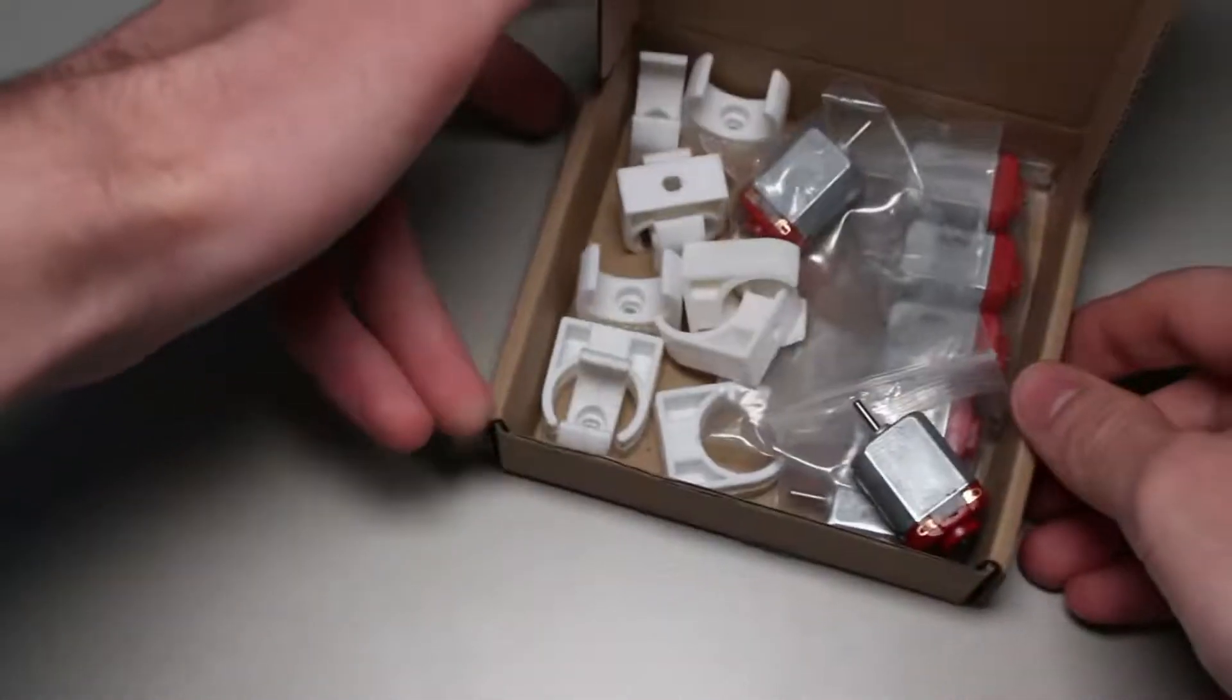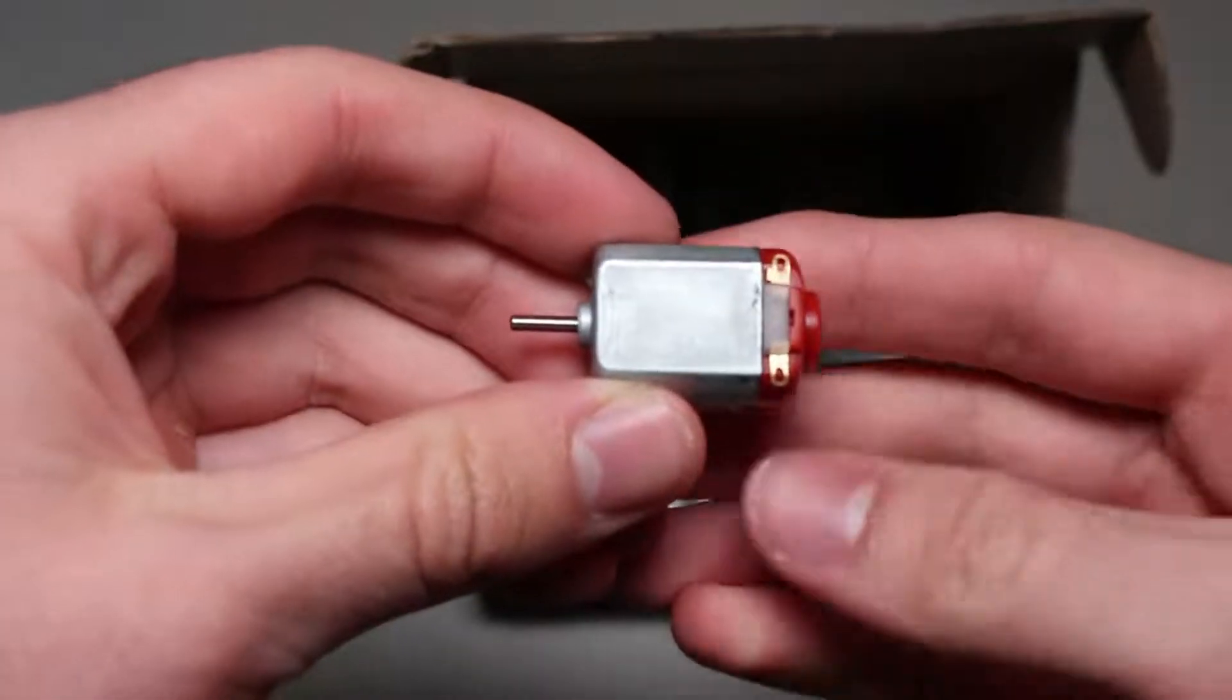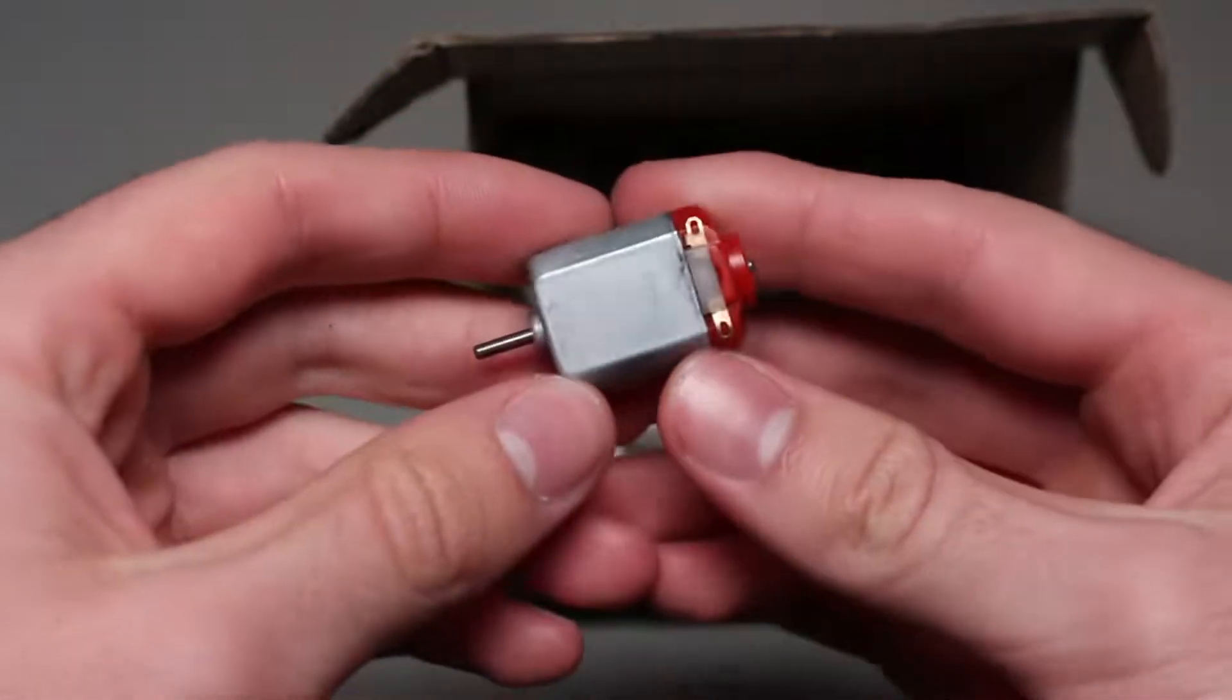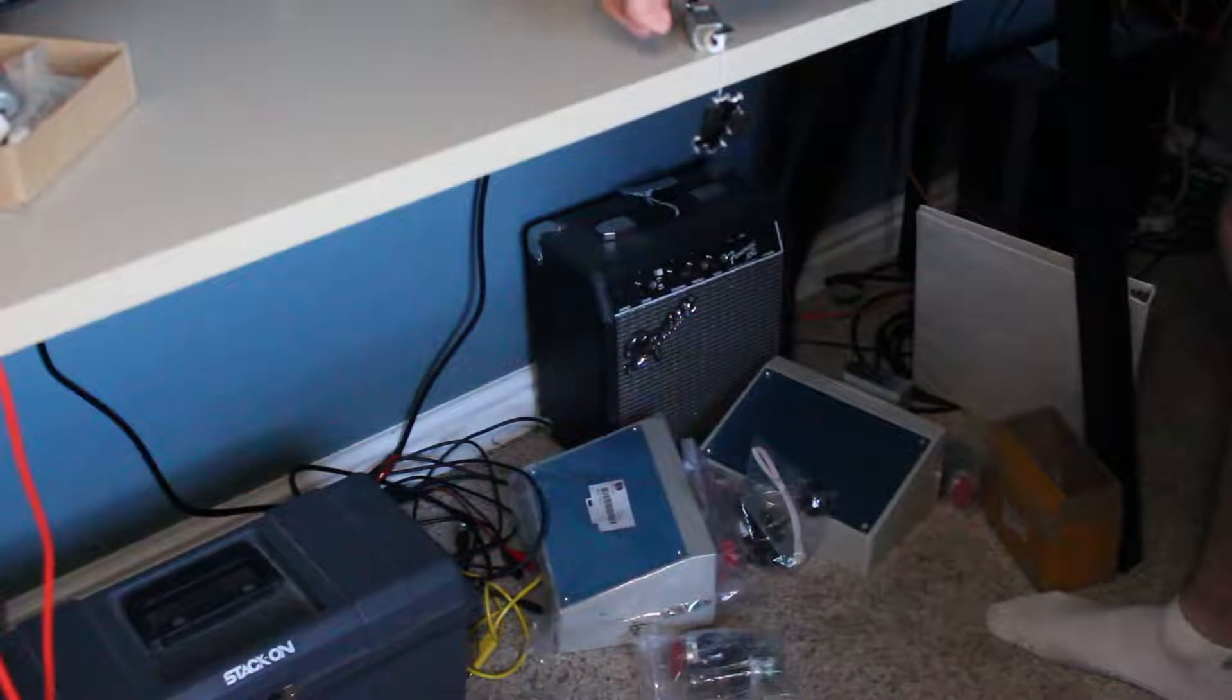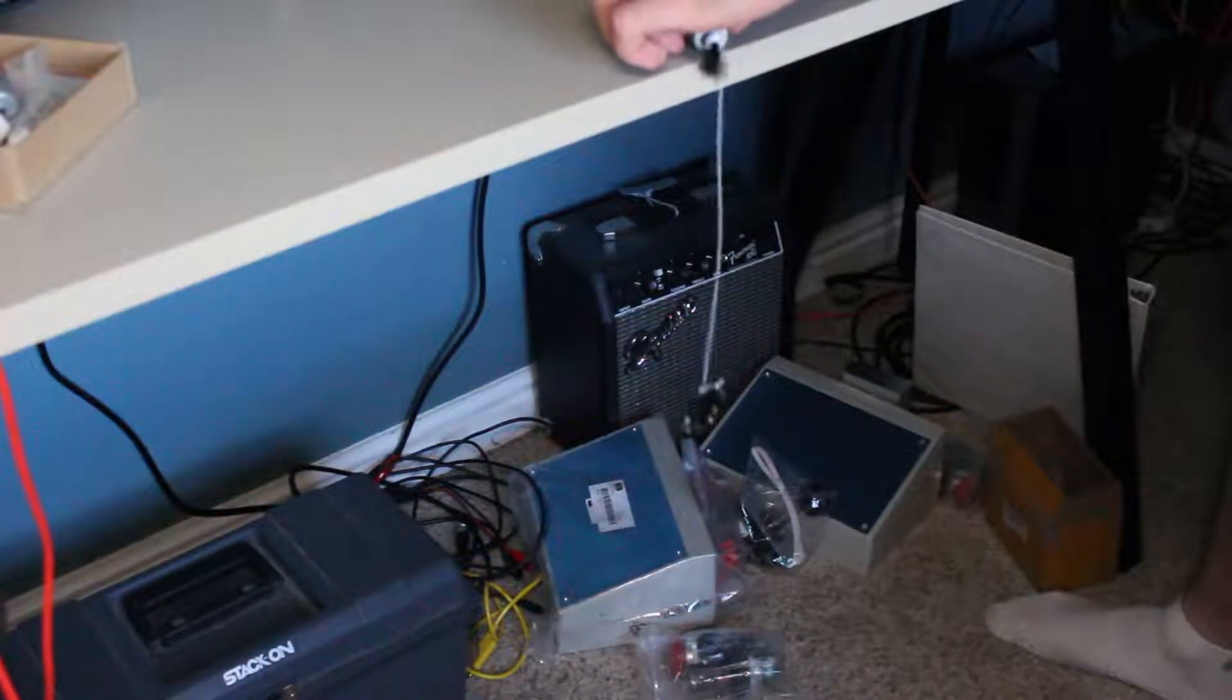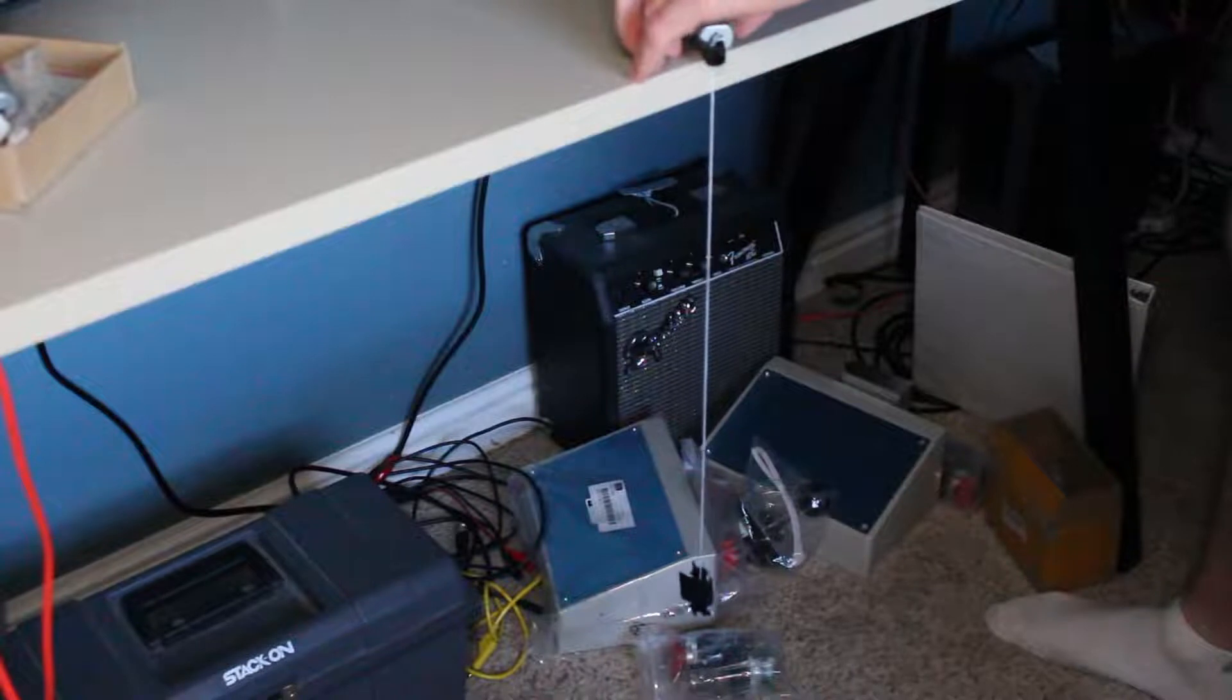Basically, the motors will wind and unwind the string that the spider will be attached to, making it seem like the spider is moving by itself. I set up a quick test using my power supply and a dummy to see if my idea would work. And as we can see, it does. By simply switching the polarity to change which way the motor spins, we can bring the spider up and down.